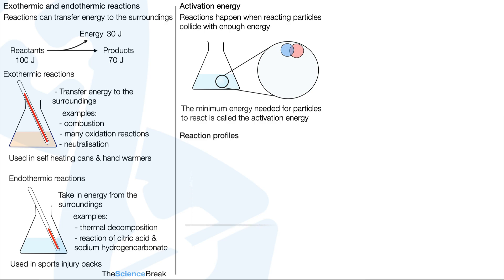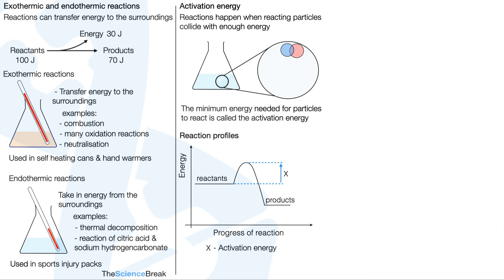Reaction profiles. Here's a reaction profile showing energy on the y-axis and the progress of the reaction on the x-axis. For our reactants we can see the energy level, however the energy in the products is a bit lower. We can also show the activation energy — it is the difference between the reactant line and the peak of that hump. We also need to know the overall energy change, shown by the reactant line and the products line. You should be able to label both of those parts on a reaction profile graph.